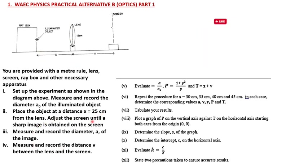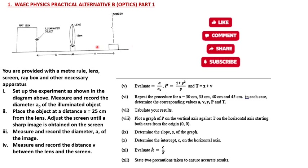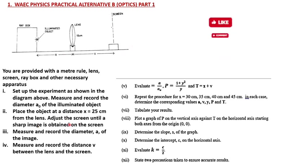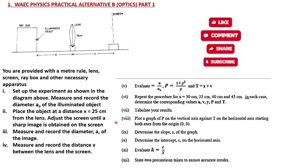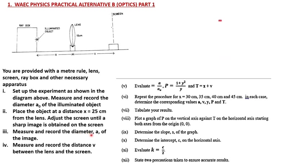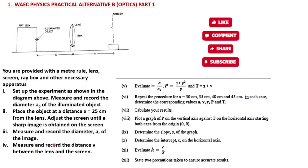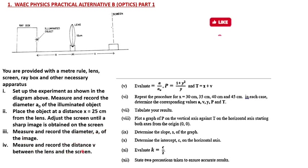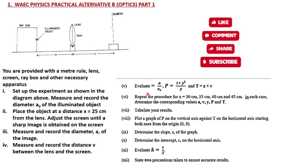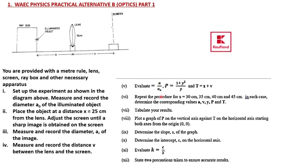Adjust the screen — moving it back and forth — until a sharp image is obtained on the screen. Measure and record the diameter A of the image. Measure and record the distance v between the lens and the screen. Then evaluate A over A-naught.